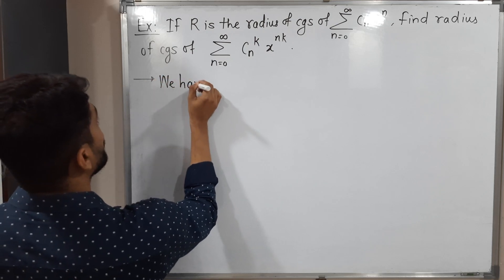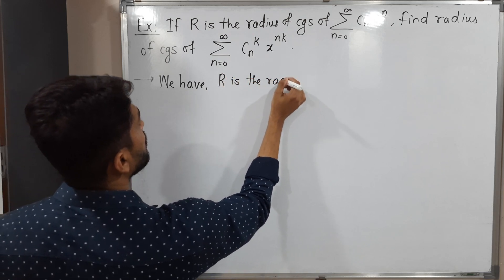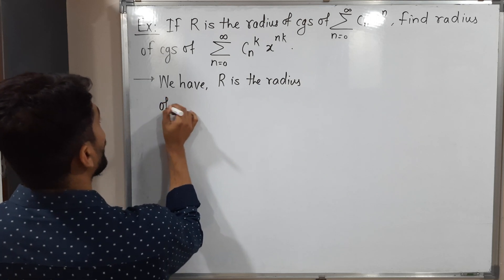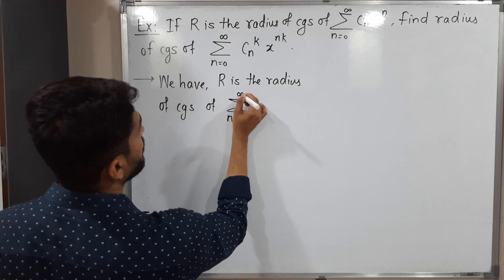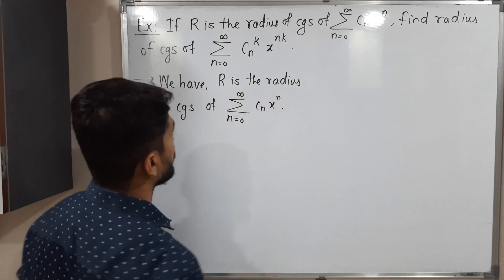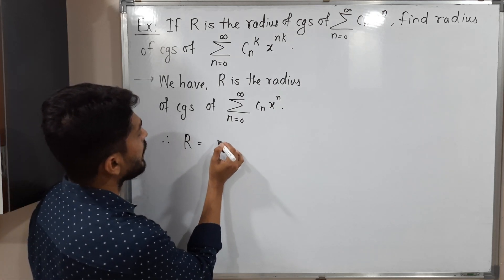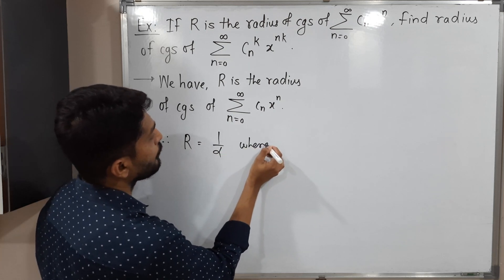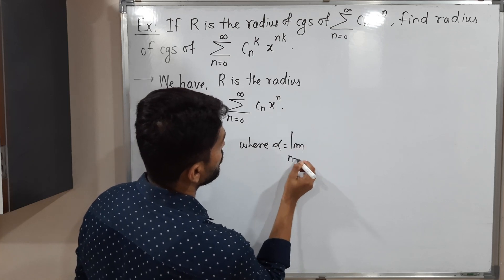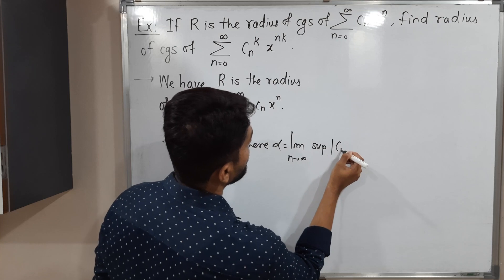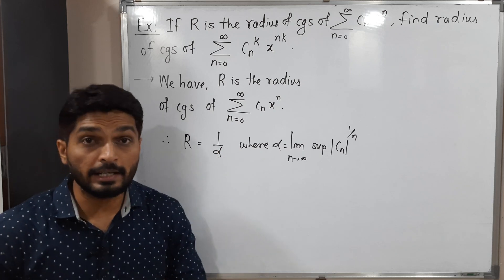We have R as the radius of convergence of the power series summation n running from 0 to infinity, cₙ x raised to n. We are familiar with the formula of radius of convergence. The radius of convergence R equals 1 by alpha, where alpha is defined as the limit as n tends to infinity of the supremum of mod cₙ raised to 1 by n. The reciprocal of alpha is the radius of convergence.